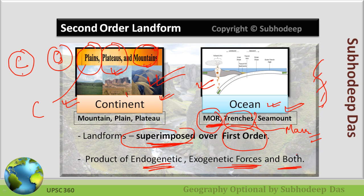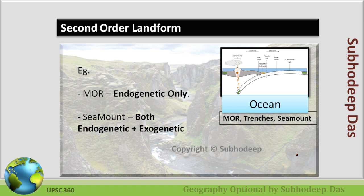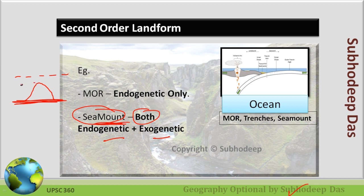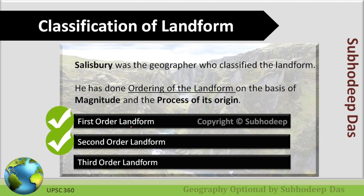First-order landform was purely the product of endogenetic forces. Second-order landform is the product of endogenetic forces, exogenetic forces, or both. For example, the internal forces lead to the formation of a sea mount, but these are also eroded by external agents — by fluvial erosion. So both applications are involved in the formation of sea mounts or normal mountains on continents.